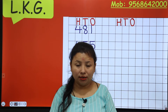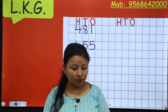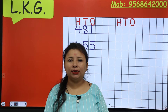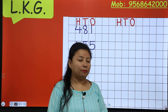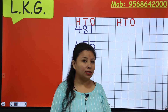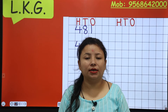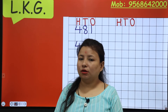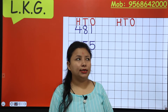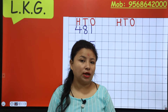Now my next number is 490. 90 it means the sound of 9 is coming, so 9 and 0 — 90. 490.